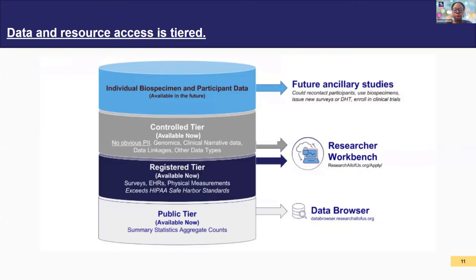We have a tiered approach to data access — there's something for everyone. The public tier requires no researcher registration and is open to anyone. It contains aggregate data, and for privacy, participant counts are rounded up to the nearest 20. Anyone can explore this using our data browser tool. The registered tier has participant-level data exceeding HIPAA standards — all dates are shifted backwards by a random number between 1 and 365, and this shift is constant per record so temporality is preserved. Researchers must register and be approved.